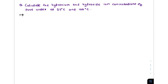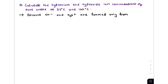Our question today is: calculate the hydronium and hydroxide ion concentration of pure water at 25°C and 100°C. Because the OH⁻ (hydroxide ion) and H₃O⁺ (hydronium ion) are formed only from the dissociation of water, their concentrations must be equal.